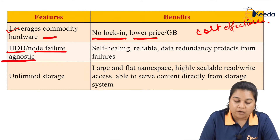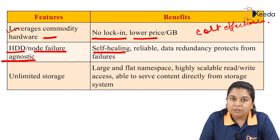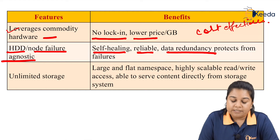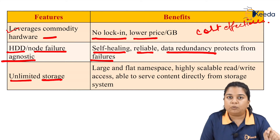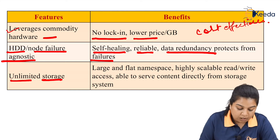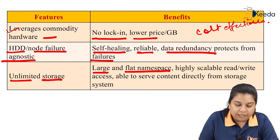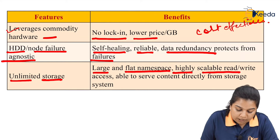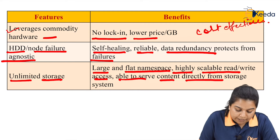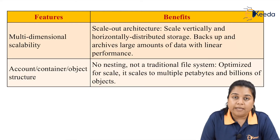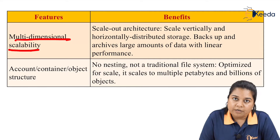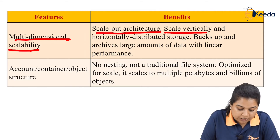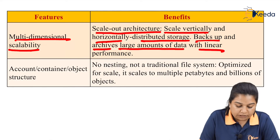Another feature is HDD or node failure agnostic, meaning self-healing. The benefit of this feature is self-healing with reliable data redundancy that protects from failures. Unlimited storage is another feature, providing benefits such as large and flat namespaces, highly scalable read-write access, and the ability to serve content directly from the storage system. The multi-dimensional scalability feature provides a scale-out architecture, vertical and horizontal distributed storage, and the ability to back up and archive large amounts of data with linear performance.